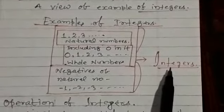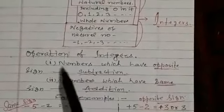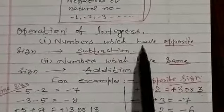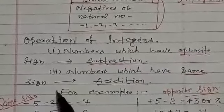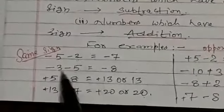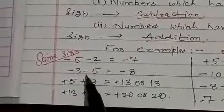When we do sums in mathematics, we need operations on integers. Here are some important rules to remember. Numbers which have the same sign: you use the addition process. For example, minus 5 minus 2 equals minus 7, because both have the same sign. Similarly, minus 3 and minus 5 becomes minus 8 — both are added because they have the same sign.